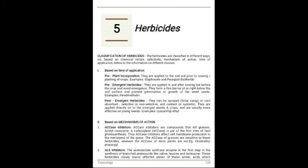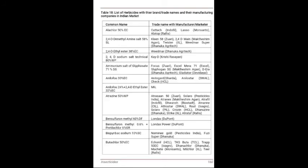The fifth chapter is Herbicides. This chapter contains classification of herbicides, classified in different ways — based on chemical nature, selectivity, mechanism of action, and time of application. Table 18 contains a list of herbicides with their brand or trade names and their manufacturing companies in the Indian market.